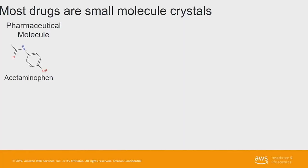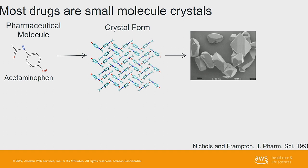What is crystal structure prediction and why is it relevant to pharmaceuticals? The small molecules that are in the drugs that we use — for example, acetaminophen, which is inside Tylenol — are packed into crystal structures, which are then put in a powder form into the tablets that we consume. This is the nanoscopic depiction of this molecule and its crystal form, and then this is what you can see if you look under a microscope.